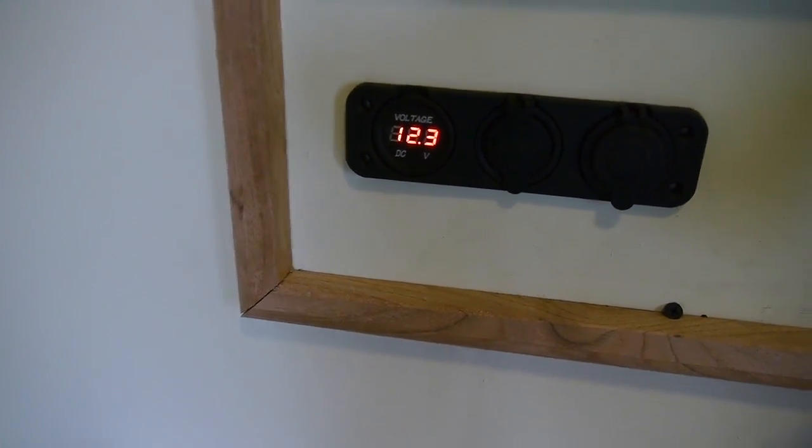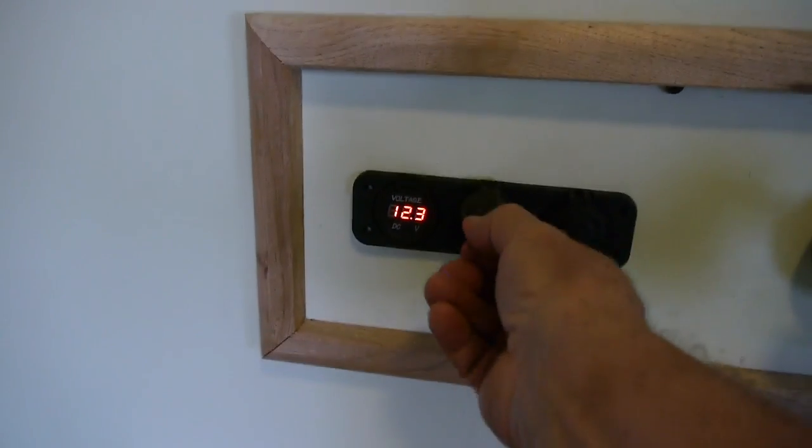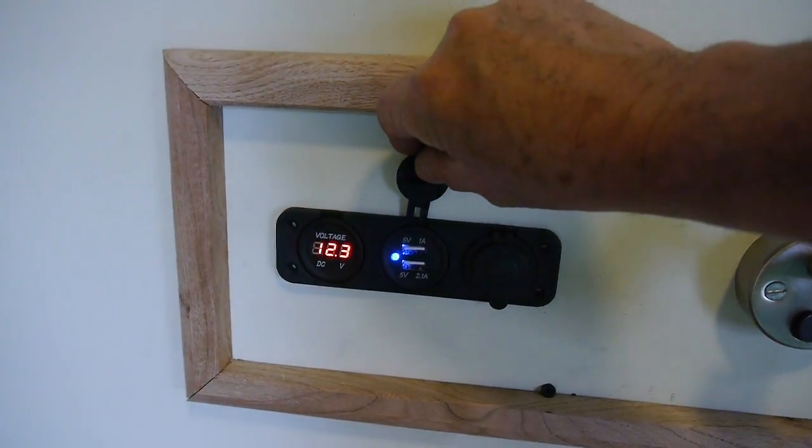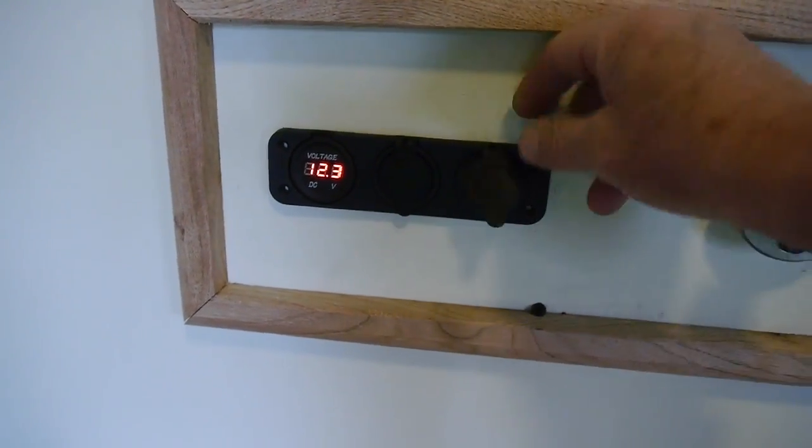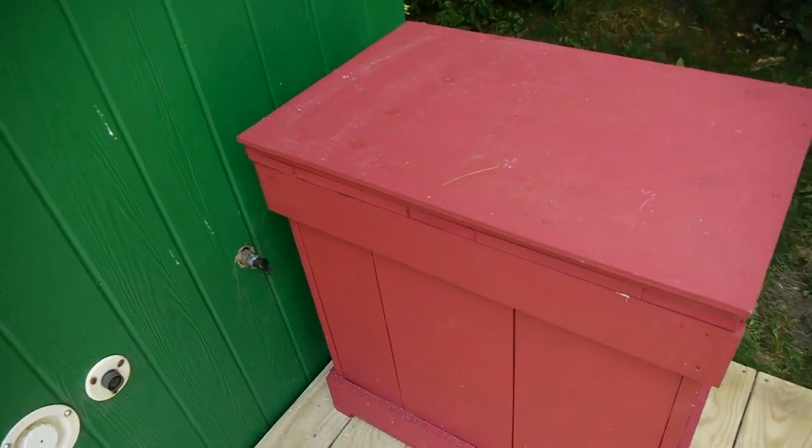Here's that combo unit I was telling you about. I'm running 12.3 volts as you can see there. That's a USB port. There's a 1 amp and a 5 amp slot there. And there is your cigarette lighter type outlet.